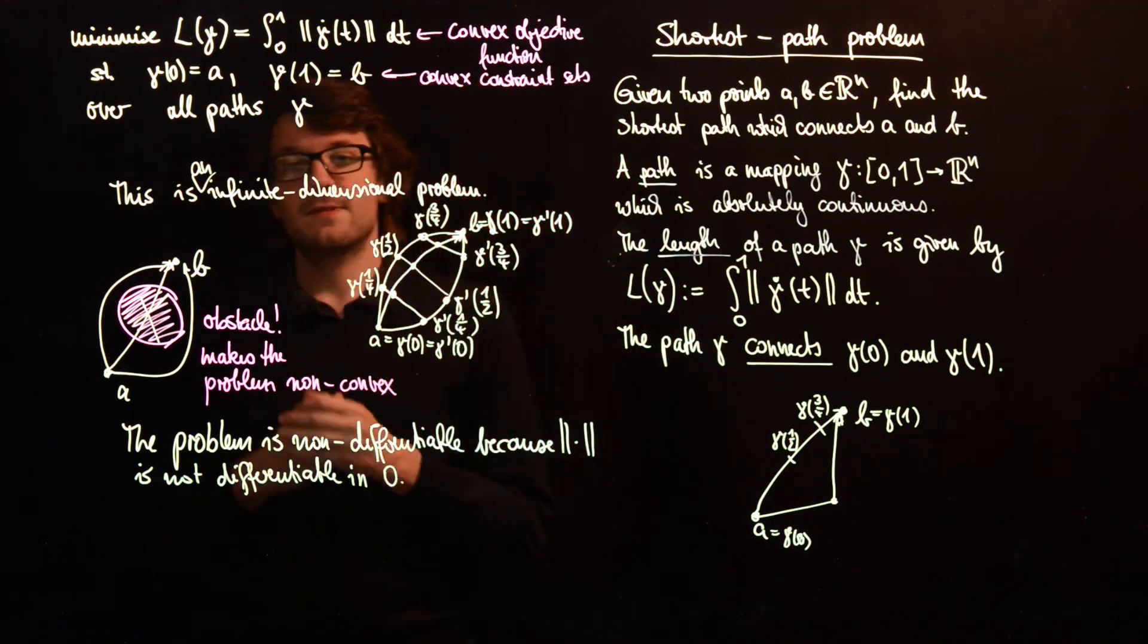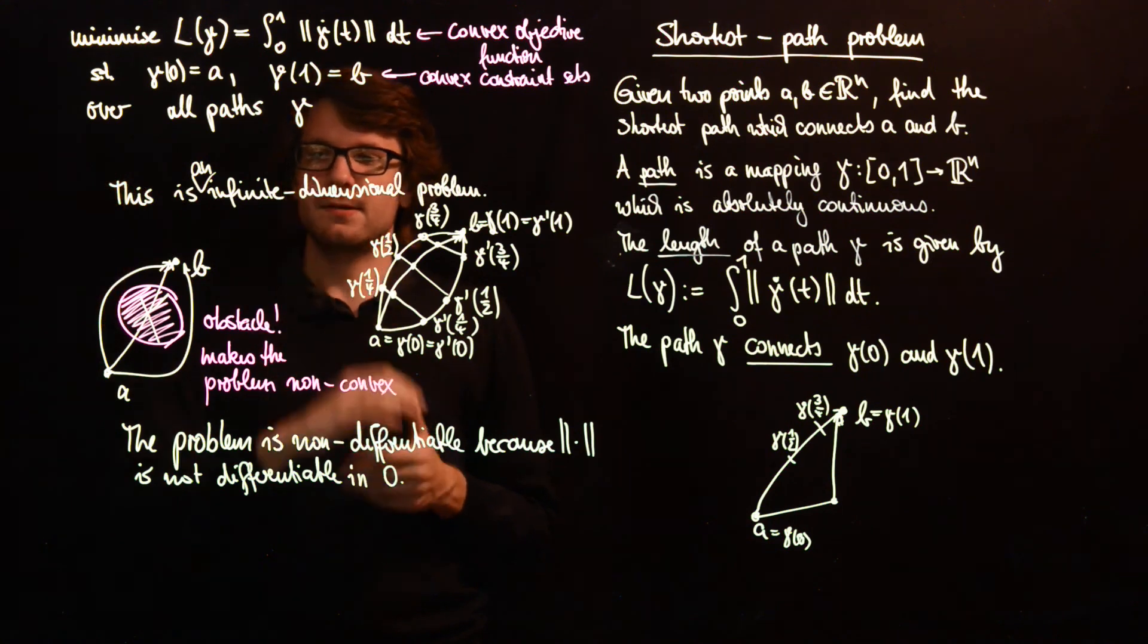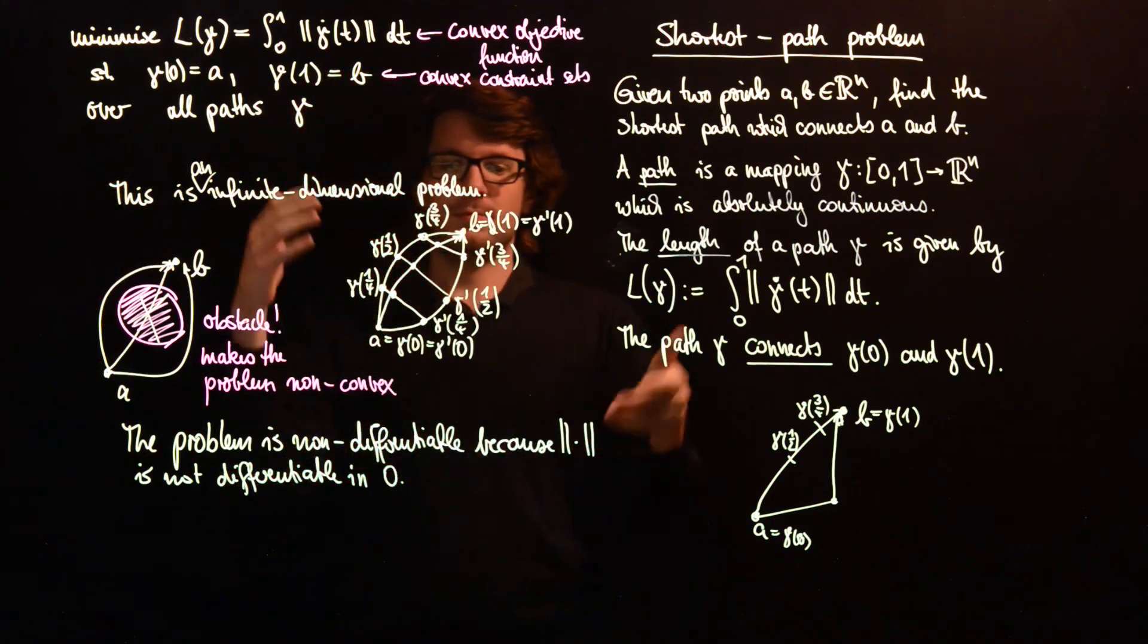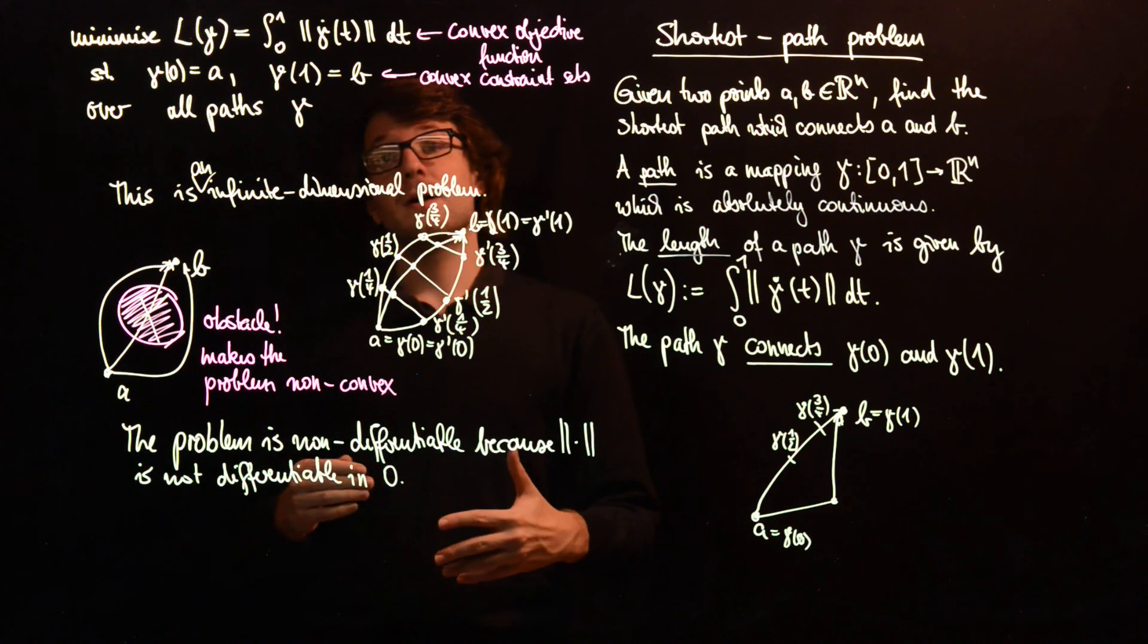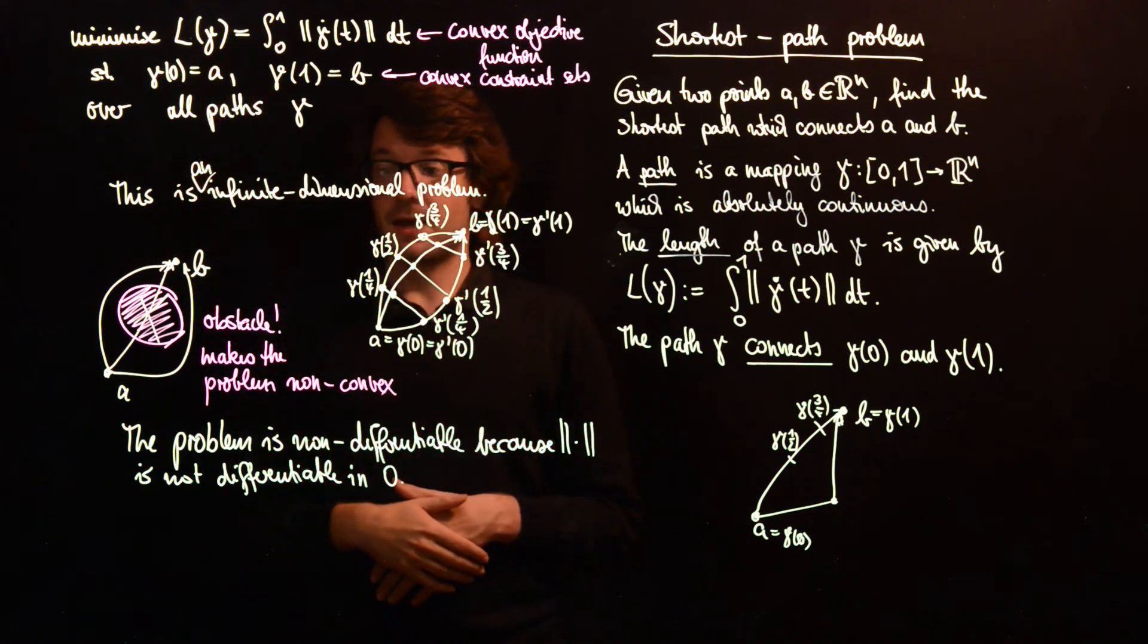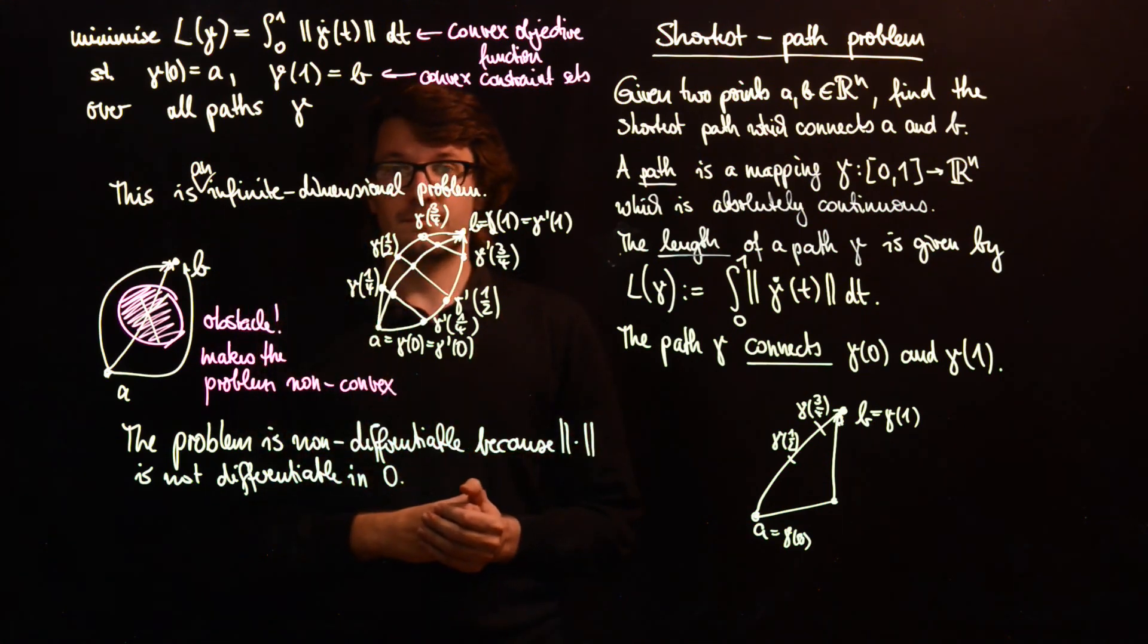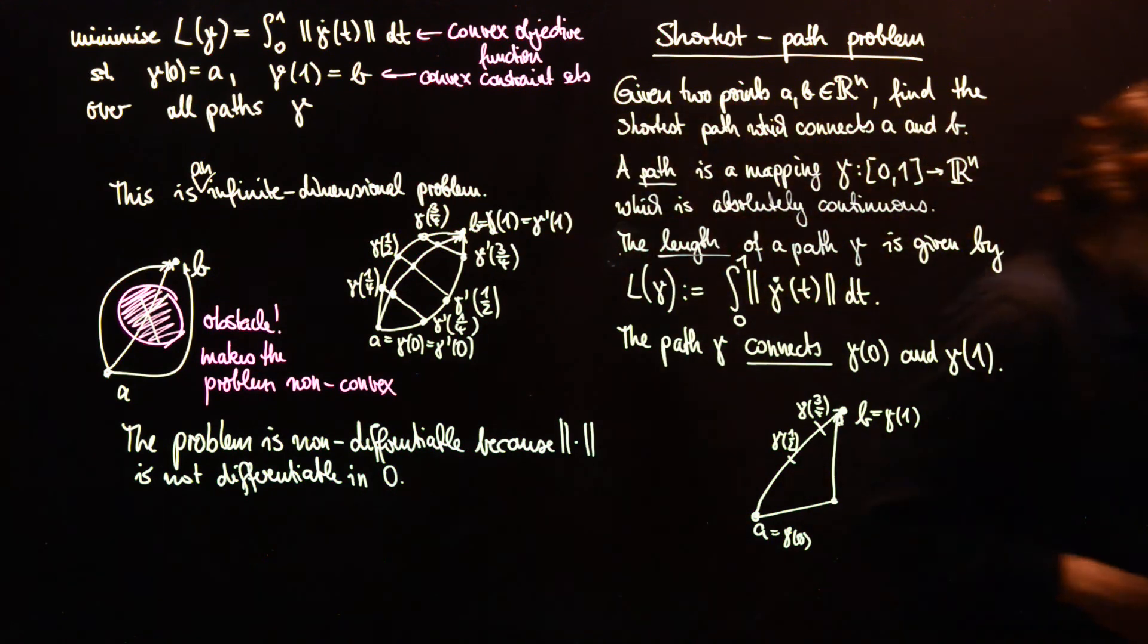So, in the next video, we are going to see how to approximate this infinite dimensional problem with a finite dimensional problem, which retains these convexity properties. And this is called discretization. So, I'm going to show you the next example. Thank you.